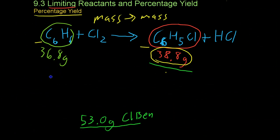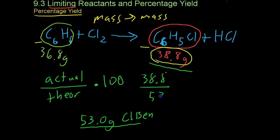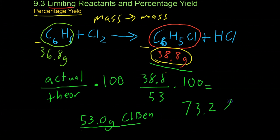Remember, the percentage yield is actual over theoretical times 100. In this case, that would be 38.8 over 53 times 100, or 73.2 percent.